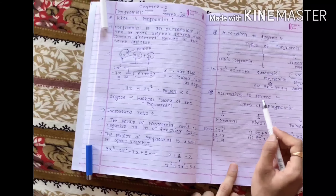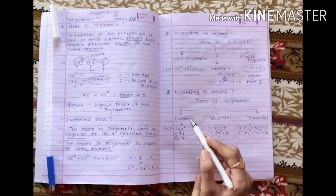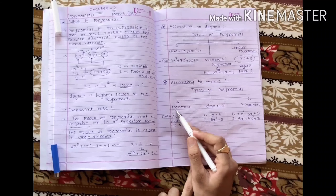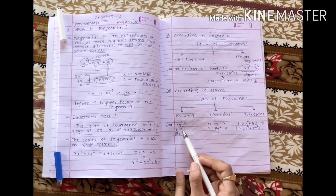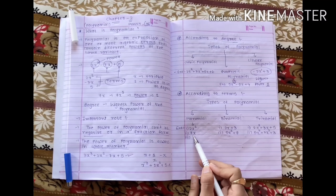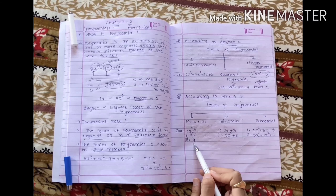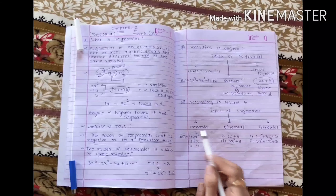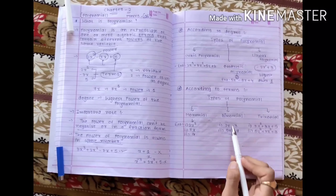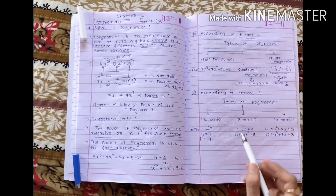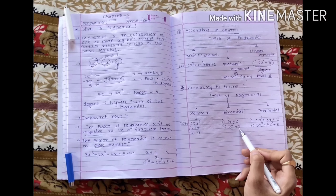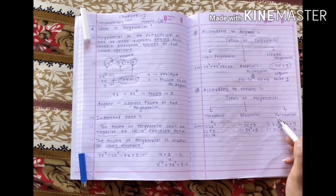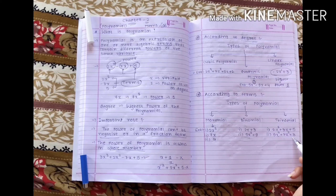Another classification is according to terms — there are three basic types. First is monomial: when a polynomial has only one term, like 2x², 7x, or 4x. Second is binomial: when a polynomial has two terms, like 2x plus 3, or 5x² plus 9. Third is trinomial: from the name itself you can tell — 'tri' means three — when a polynomial has three terms, it is called a trinomial.